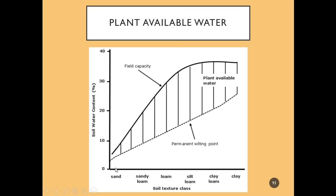Down here we have our soil textural classes. If you think of those macropores, sand is very full of macropores with almost no micropores, so its ability to hold water is pretty low. You might think we want lots of micropores, but when we have all those micropores, the particles are able to hold on to the water more strongly than the plant can extract it. This is why we see our most productive soils in this loam to silt loam area — the highest water availability, requiring the least amount of irrigation and the least amount of water stress on the plants.